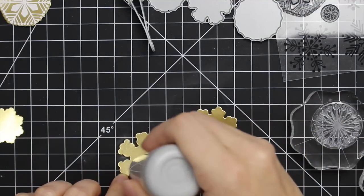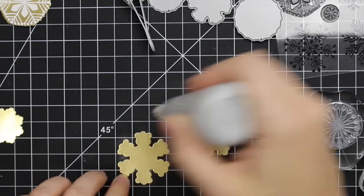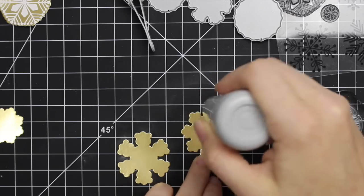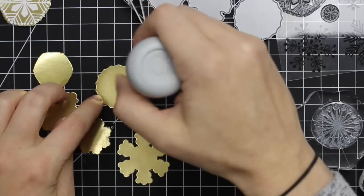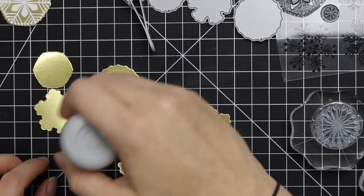I'm using the Snowflake Flurry stamp set and Snowflake Flurry dies from My Favorite Things, and I'm starting off here with some My Favorite Things gold shine cardstock.